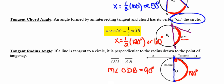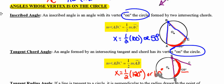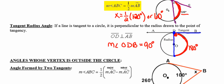To summarize the three instances we just talked about: whenever we have an angle whose vertex is on the circle, the degree measure of the angle is equal to half the degree measure of the arc. That's an important rule to bring with you. There is one exception to this rule that we'll discuss next time.